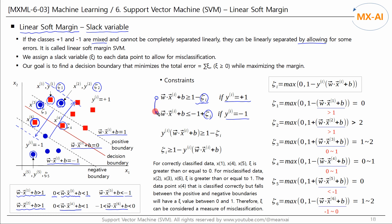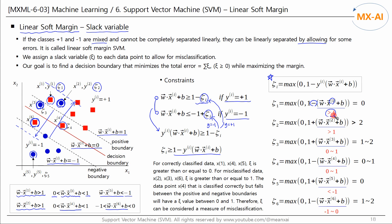These two inequalities can be expressed as one. If y is positive one, it becomes the first inequality, and if y is negative one, it becomes the second inequality. Then zeta is greater than or equal to this value. And since zeta is defined as non-negative, it can be defined accordingly. Now let's check the zeta value of each data point. For x1, the sign is negative because y is positive one, and this value is greater than one, so zeta one is zero.